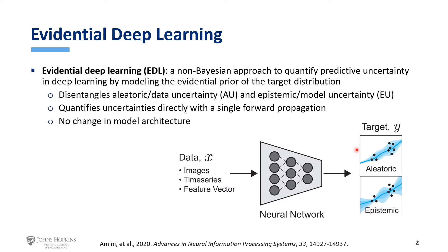EDL further disentangles the total uncertainty into two components. Aleatoric, or data uncertainty, refers to the intrinsic randomness of the data, and this originates from the natural complexity of the data. Epistemic, or model uncertainty, refers to the lack of knowledge about the data, and this can be reduced by adding more training data.